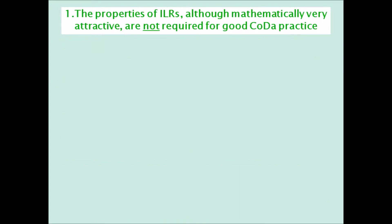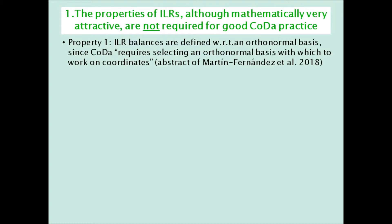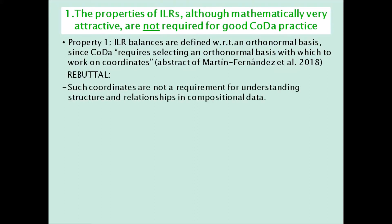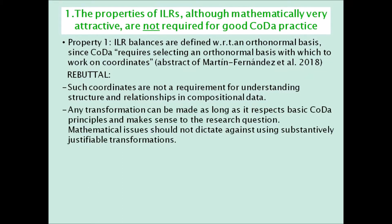ILRs are vaunted as having the right mathematical properties for analyzing compositional data, and these properties are certainly very attractive. One of the main theoretical reasons for preferring ILRs is that they are coordinates with respect to an orthonormal basis. Martin Fernandez and co-authors say explicitly that CODA requires selecting an orthonormal basis with which to work on coordinates. Our rebuttal is that such coordinates are not a requirement for understanding structure and relationships in compositional data. Any transformation can be made as long as it respects basic CODA principles and makes sense to the research question. Mathematical issues should not dictate against the use of substantively justifiable transformations.